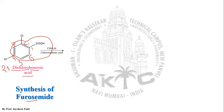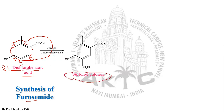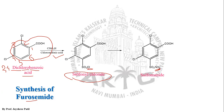This benzoic acid undergoes chlorosulfonation — treatment with chlorosulfonic acid. Since furosemide is a sulfamoyl anthranilic acid derivative, it contains a sulfonamide moiety. To introduce that, we first introduce a sulfonyl chloride moiety via treatment with chlorosulfonic acid.